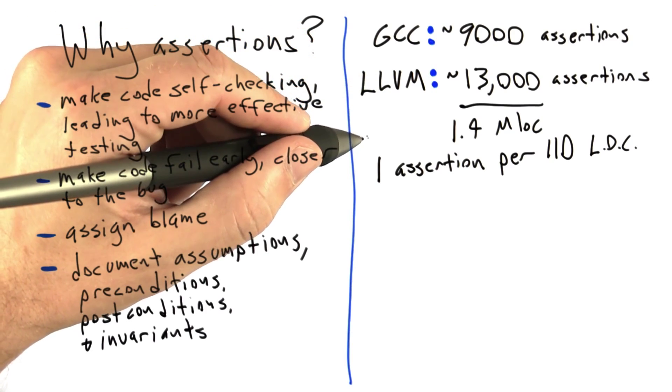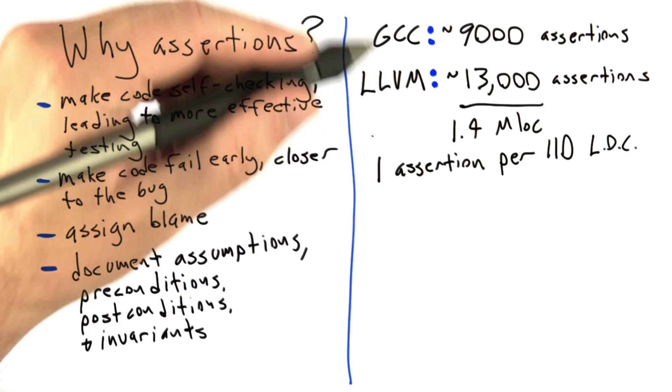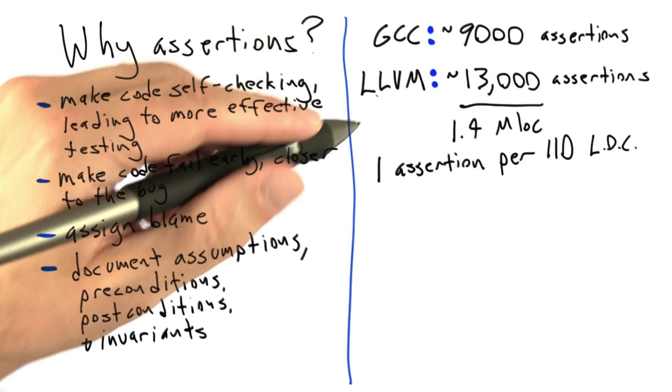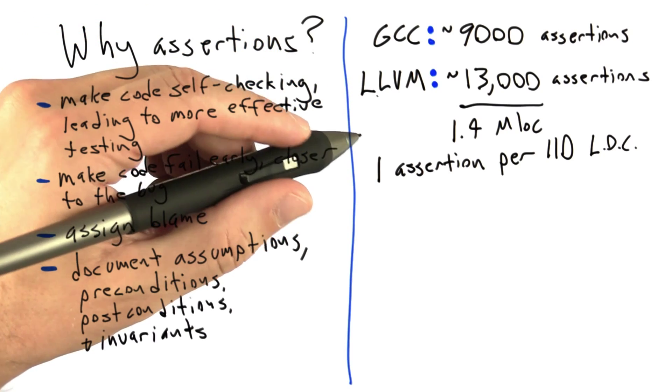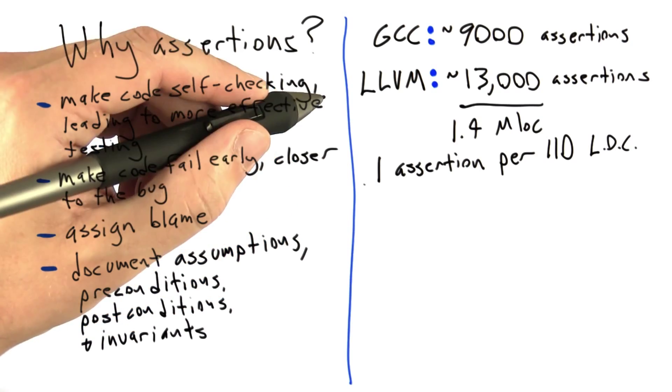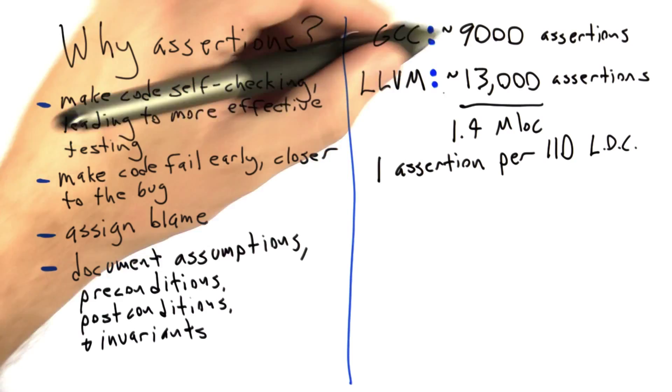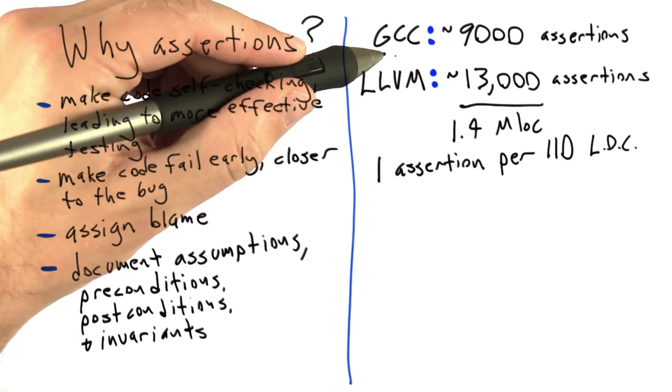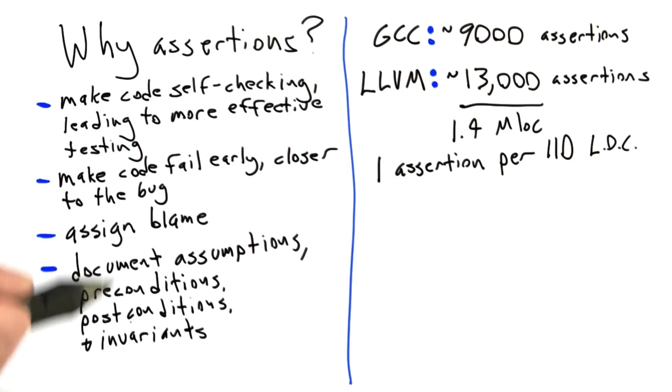One thing that I've done personally is reported a lot of compiler bugs to both the GCC and LLVM products. And one thing I've learned is that much of the time these bugs show up as assertion violations. Not always, sometimes these compilers seg-fault and have other problems, but most of the time they're assertion violations. So these assertions are actually succeeding at accomplishing the goals that we talked about.